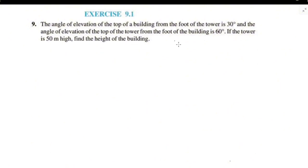The angle of elevation of the top of a building from the foot of the tower is 30 degrees, and the angle of elevation of the top of the tower from the foot of the building is 60 degrees. If the tower is 50 meters high, find the height of the building.